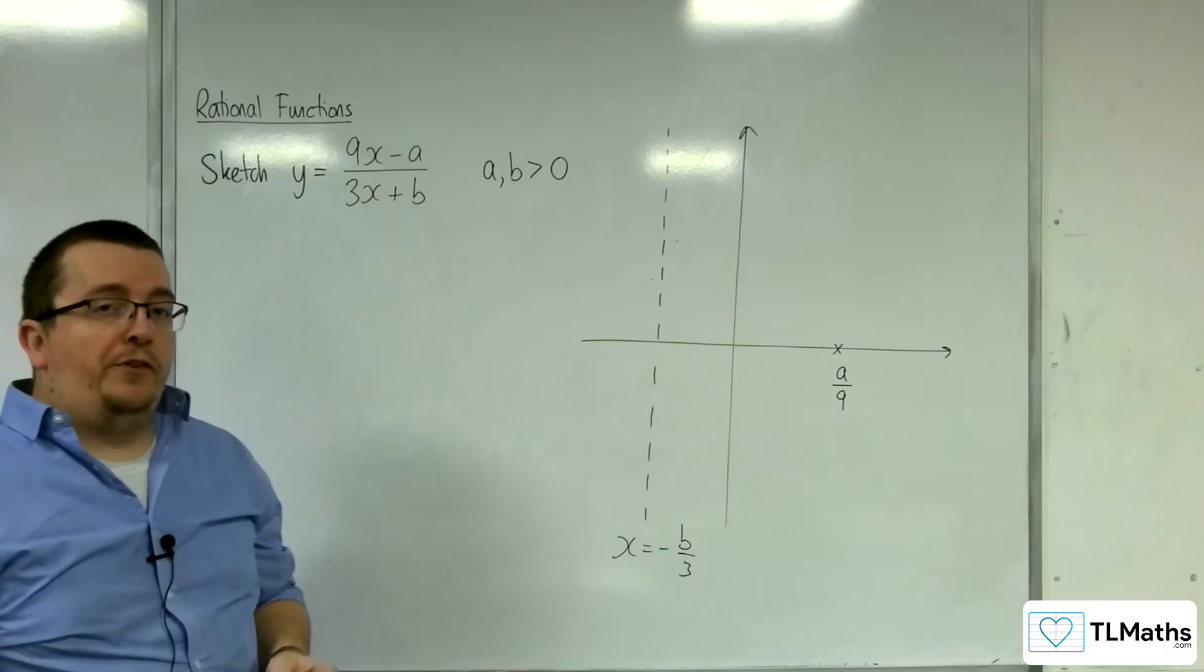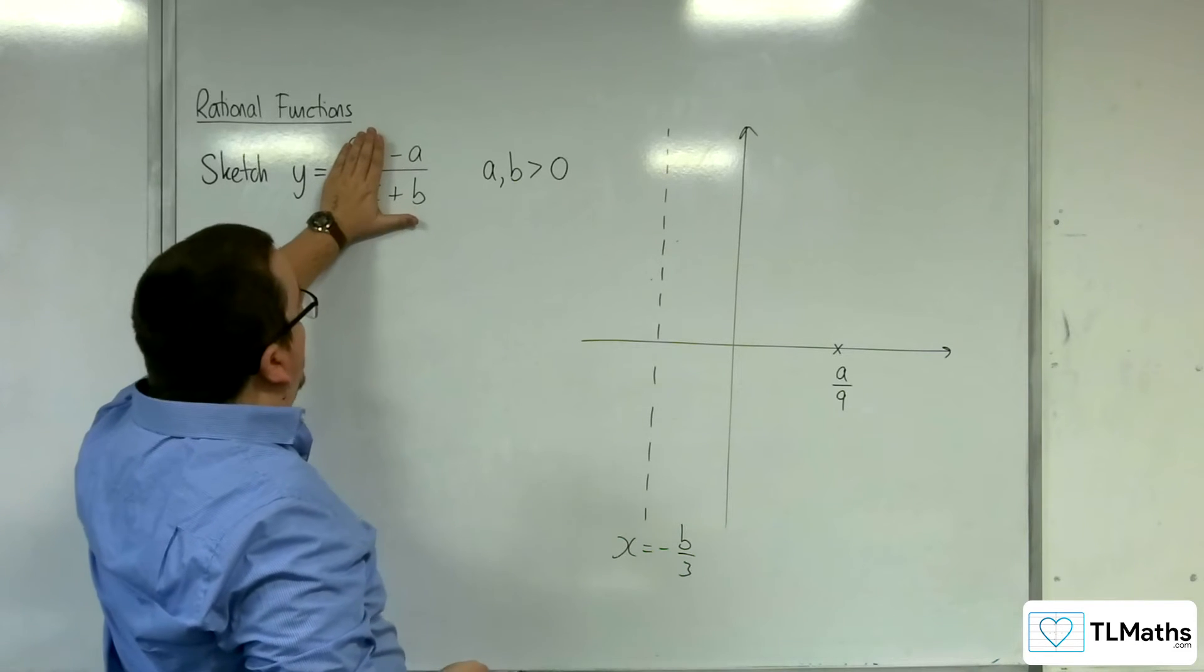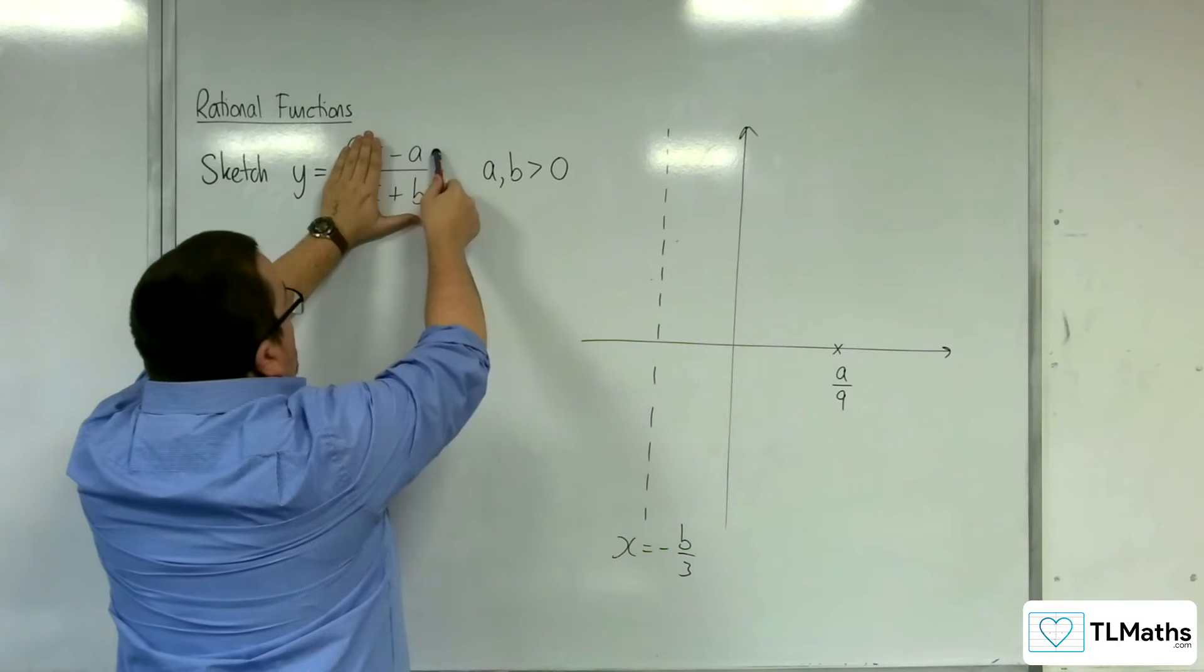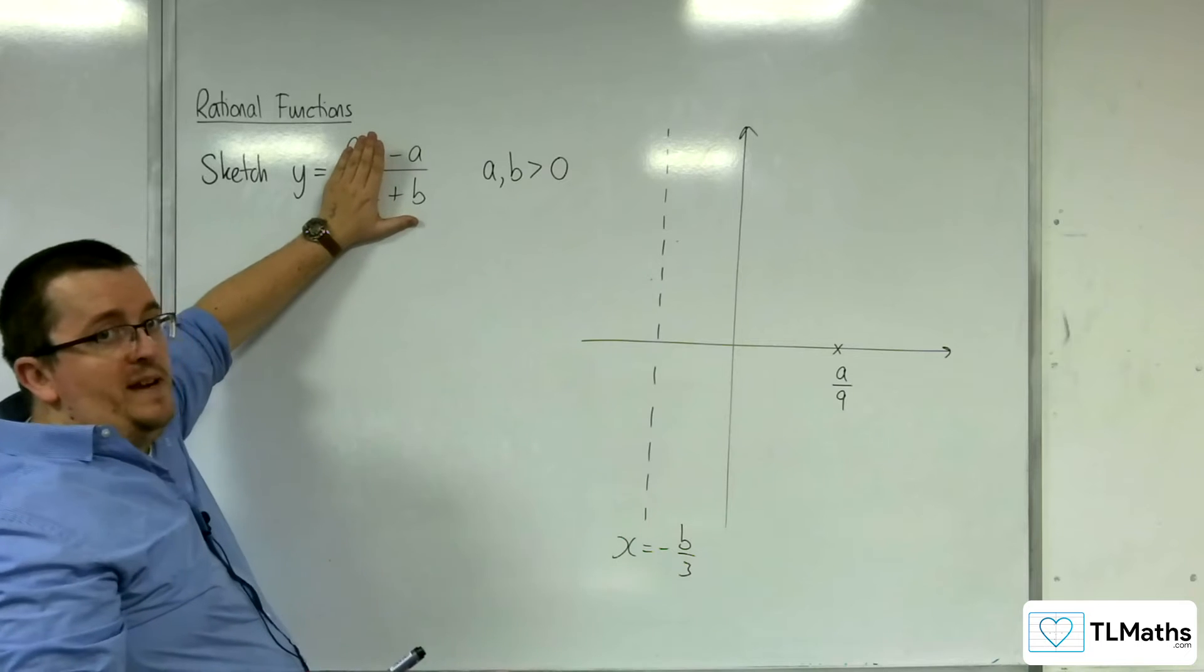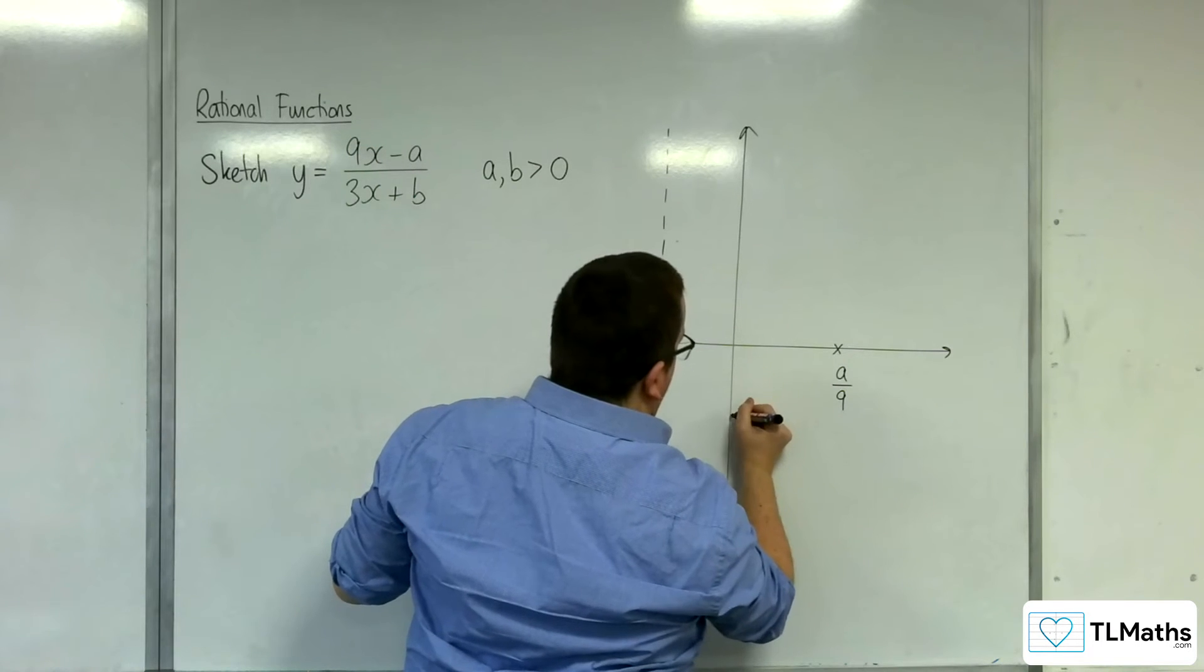Now, where does it cross the y-axis? Well, that's when x is 0, and we'll have minus a over b. Now, because a and b are both positive, that means minus a over b has got to be negative. So minus a over b has got to be somewhere down here.